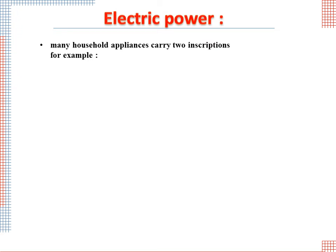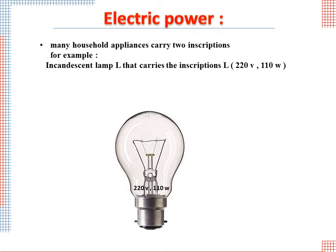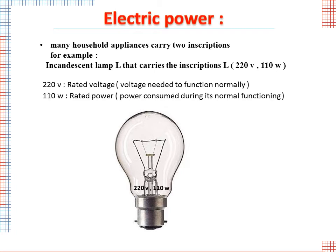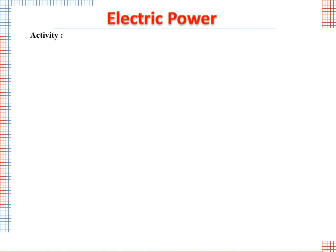Electric power: Many household appliances carry two inscriptions. For example, an incandescent lamp carries the inscriptions 220V and 110W. What is the meaning of each inscription? 220V means rated voltage - the voltage needed to function normally. 110W is the rated power - the power consumed during its normal functioning.